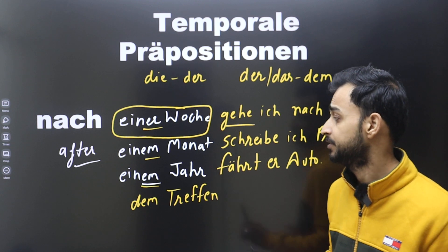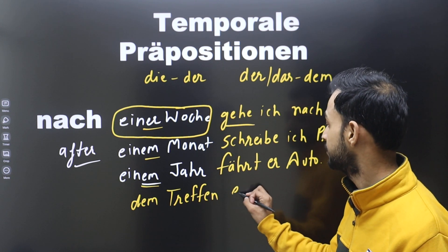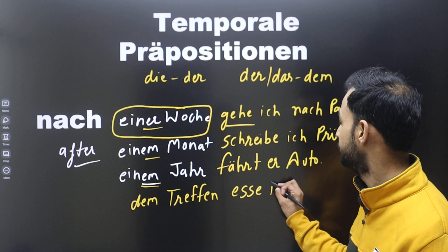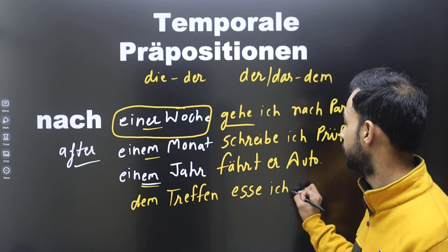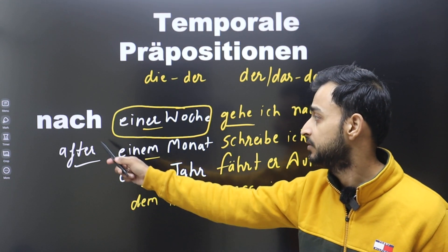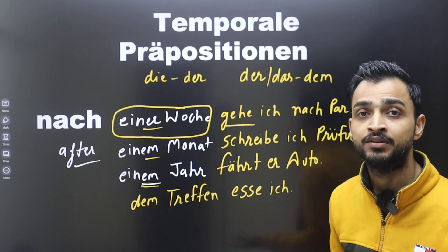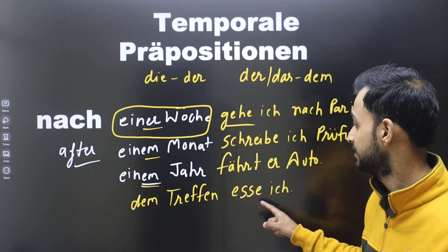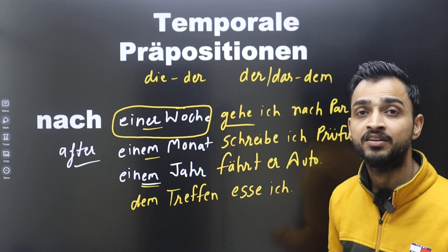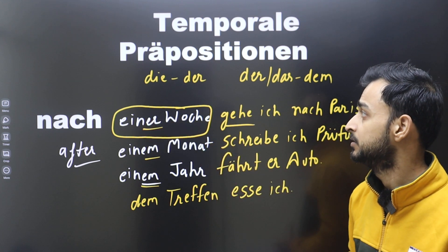'Nach dem Treffen esse ich' — after the meeting, I eat. You can also reverse the word order: 'Ich esse nach dem Treffen' — that is also correct. So this is the use of 'nach,' a dative preposition.